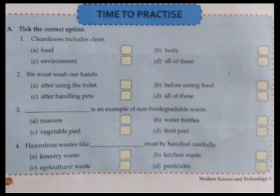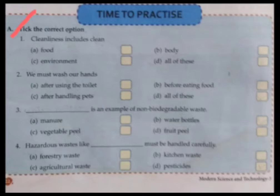Today we will start Exercise A — tick the correct option. Question one: Cleanliness includes — options are: a) food, b) body, c) environment, d) all of these. As we have learned, cleanliness includes clean food, clean body, and clean environment, so the answer is d) all of these.